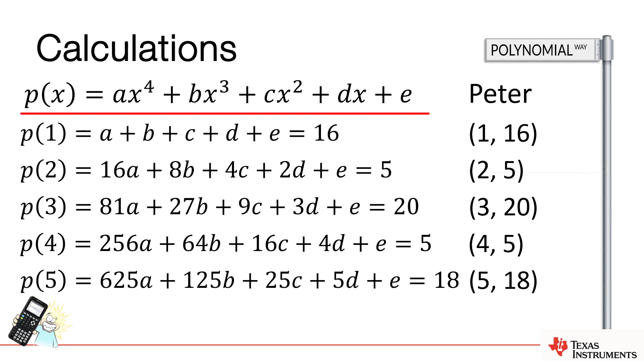Now I've got five equations and five unknowns — a, b, c, d, and e. If I can derive them, then I'll have my polynomial.